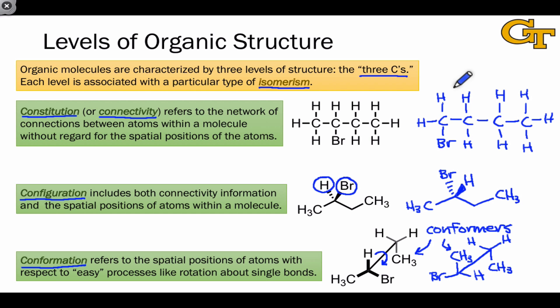One last point about the levels of organic structure is that the way they're organized correlates with the energy differences between isomers. Constitutional isomers have grossly different properties — different physical properties, different reactivity. Configurational isomers are somewhat more similar, with more similar energies and properties. Conformational isomers are even more similar, because the processes that interconvert them are relatively subtle and low impact, not causing large changes to the energy of the molecule. Nonetheless, these changes can be important in thinking about molecular structure, and so we're going to zero in on this level first, talking about configuration in a later lesson.